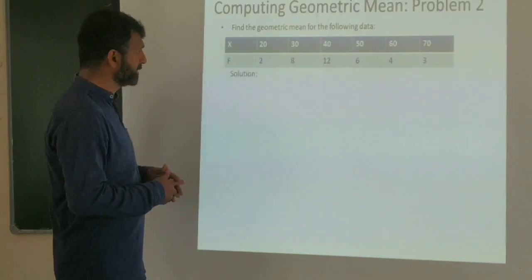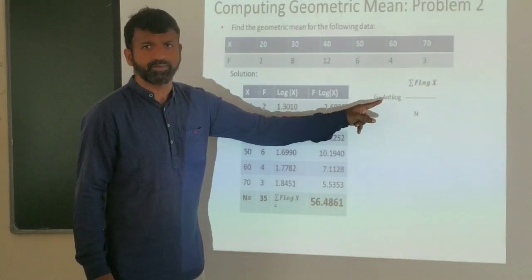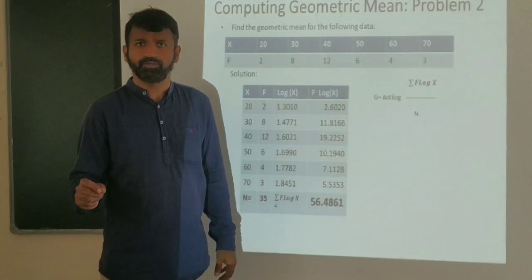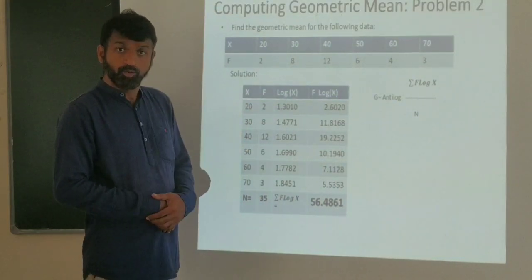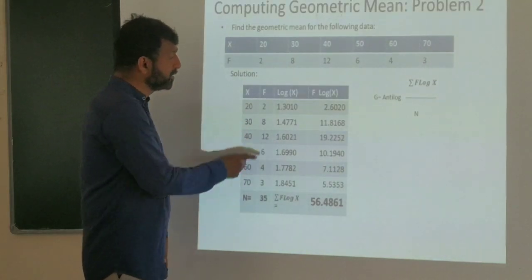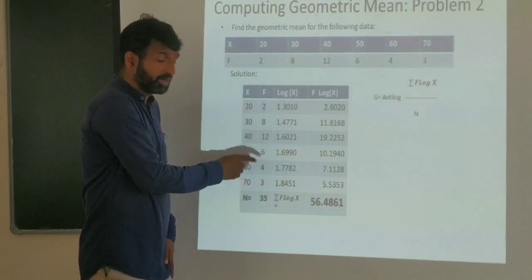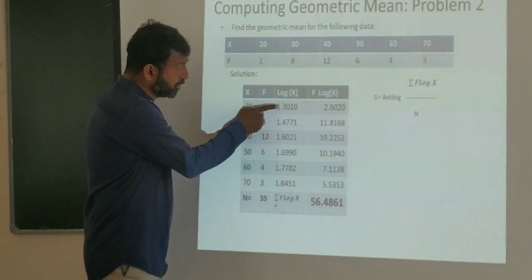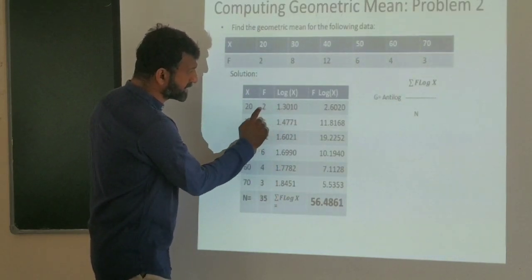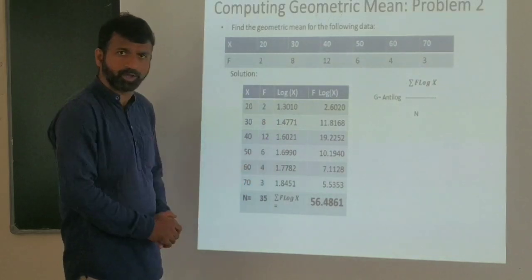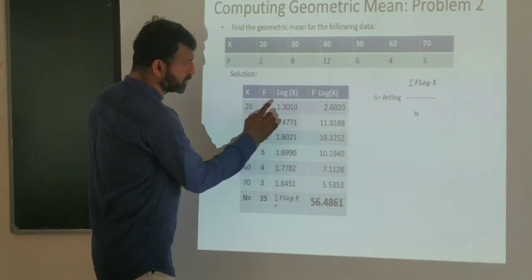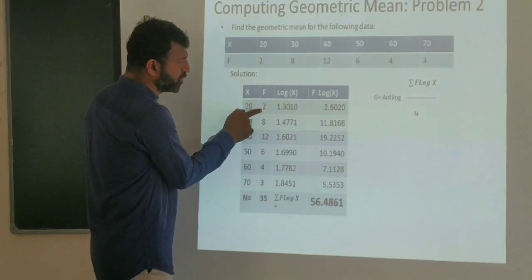Looking at the solution, the formula is G equals antilog of the sum of F log X divided by N. We list x values 20, 30, 40, 50, 60, 70 with their frequencies. For each x we find log x, then compute f times log x. For example, log 20 equals 1.3010, multiplied by its corresponding frequency 2.